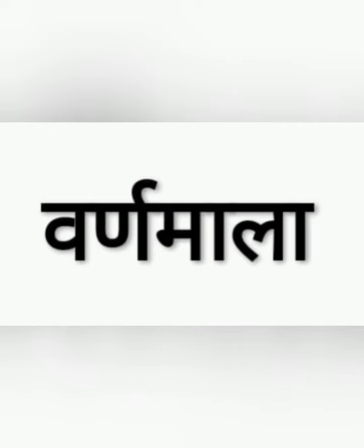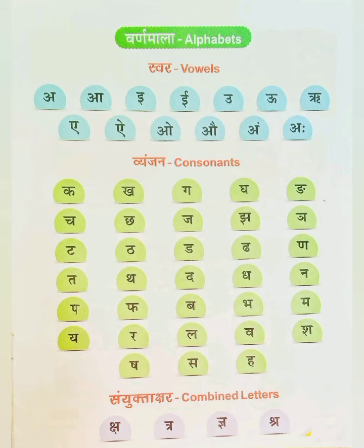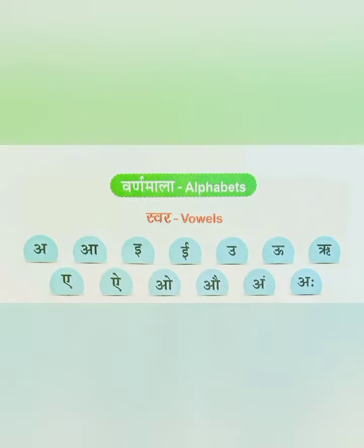First, we are going to learn Varna Mala. Varna Mala consists of Swaraksha (vowels), Venjanaksha (consonants), and Samyokta Aksha (combined letters).